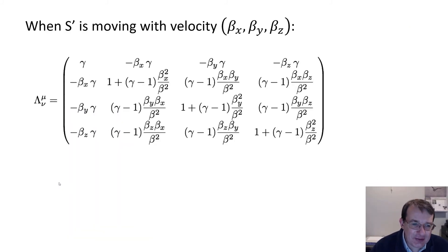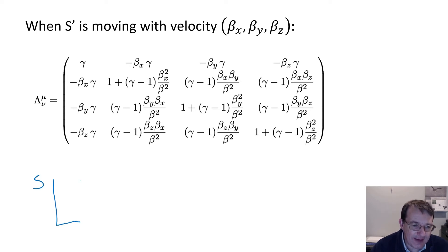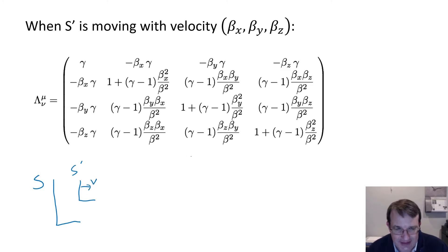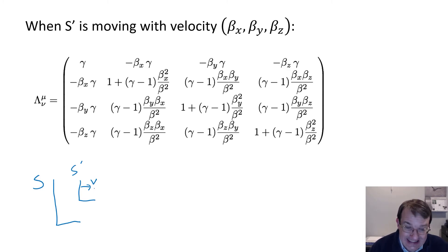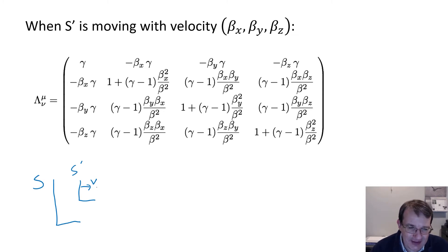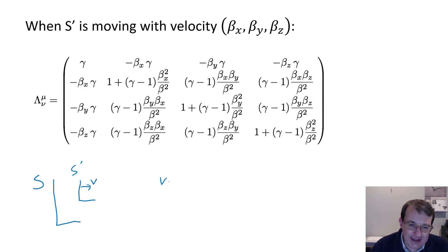We did that transformation assuming relative motion in the positive x direction. You might wonder what happens for any general velocity direction. Usually we don't need to worry about that, because we can always rotate the axes so that the relative velocity is in the positive x direction. However, in rare cases where you do need the general transform, you end up with a rather complicated matrix.